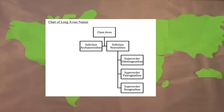Next is the subclass Neornithes, which are the newer birds. Under that are three distinct superorders: Odontognathae, Paleognathae, and Neognathae.